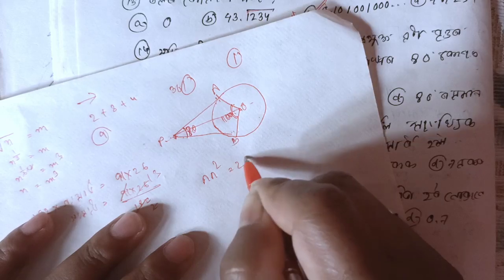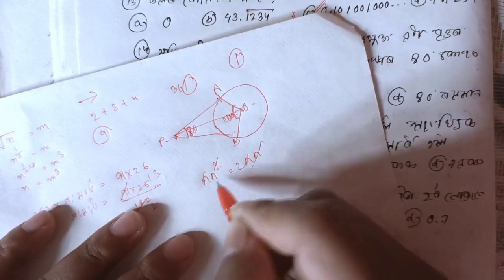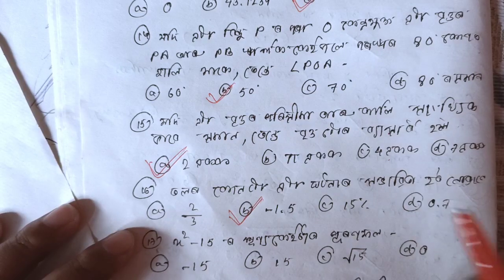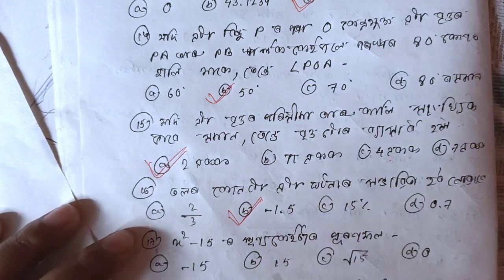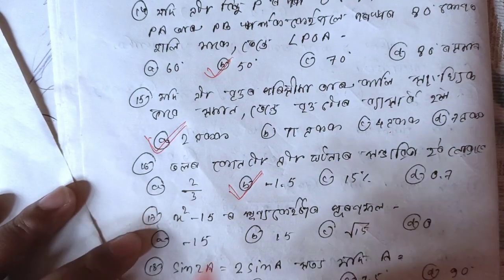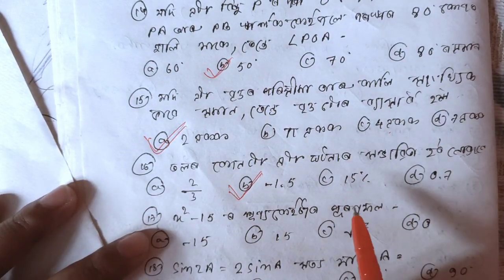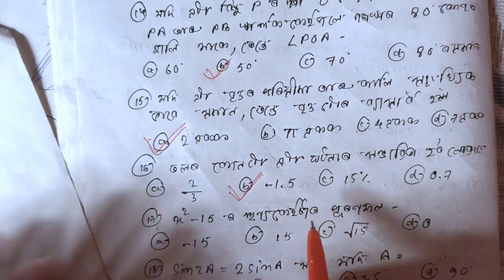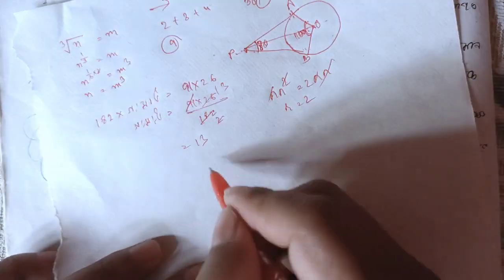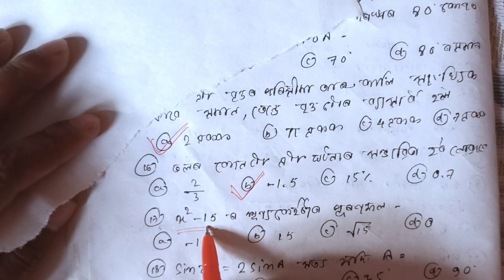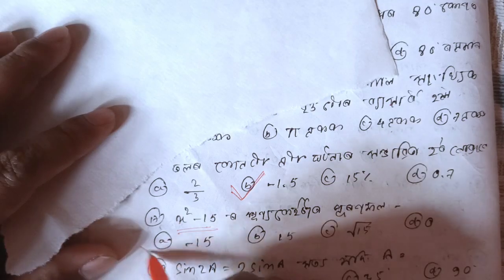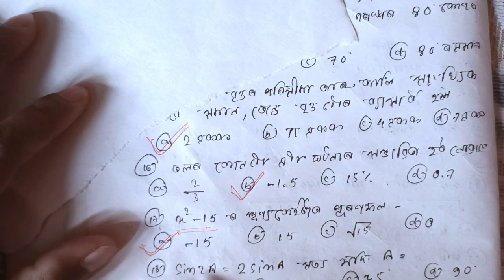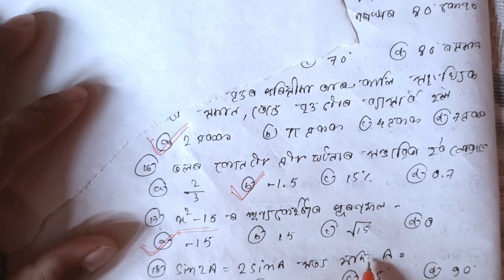This is pi r squared, 2 pi r. Pi r cancels, square r cancels, r cancels. So this is 0.0. 15% means 15 by 0.015. If you see x squared minus 15 is 0. This is c by a — c means positive and a means x squared, minus 15 by 1, which is minus 15.